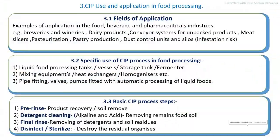CIP — Cleaning In Place — is used in automatic processing plants, mostly in liquid food processing, where processing equipment such as storage tanks, vessels, fermenters, mixing equipment, heat exchangers, pipings, and fittings are all connected in an automatic processing line. The cleaning of this processing line is carried out using the Cleaning In Place system.